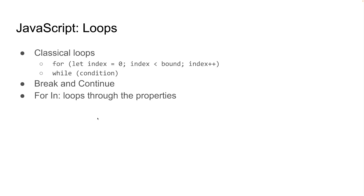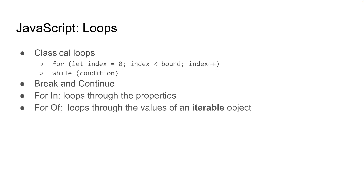For...in is a very interesting concept in JavaScript. If we have a JSON object — a key-value pair — for...in iterates over the keys. It tells you what keys this object has — that means it loops over keys.